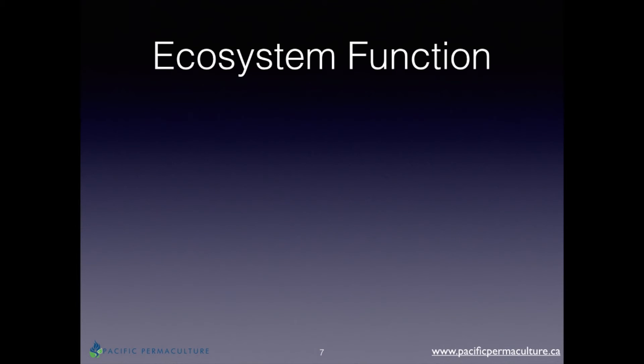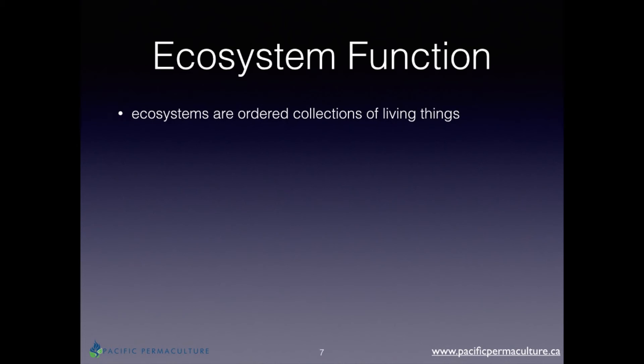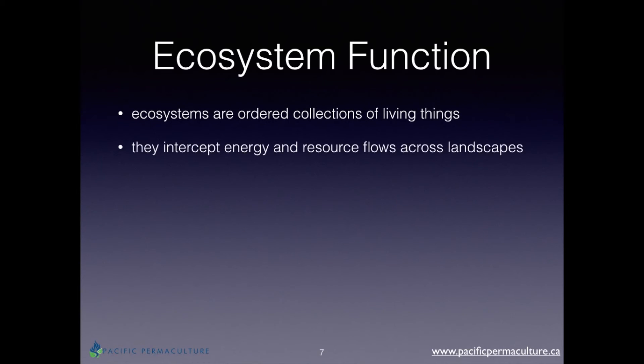Ecosystem function is also very important to permaculture design. Permaculture recognizes the need for a healthy environment with a minimum of pollution and a maximum of living, growing elements. An ecosystem is just an assembly of living things that intercept energy and resources as they flow across the landscape — sunlight, water, wind, nutrients. Ecosystems catch and store these energies in useful ways, much like the example of the sidewalk and rainwater: the sidewalk catches water and funnels it to the garden, mimicking exactly how ecosystems function.